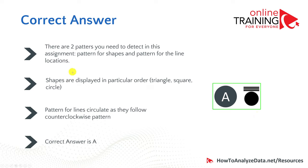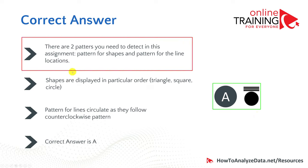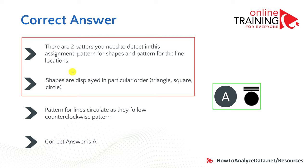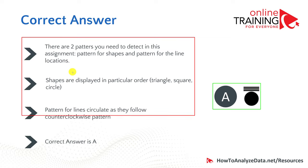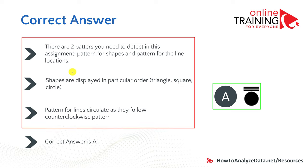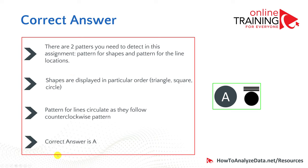Let's recap. There are two patterns to detect: the pattern for shapes and the pattern for the line location. Shapes are displayed in a particular order: triangle, square, circle. The pattern for lines is in a counterclockwise order. So the correct answer is A. You will see a lot of these types of questions in assessment tests.